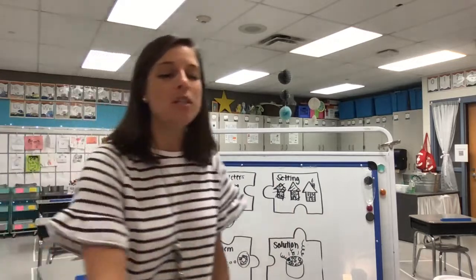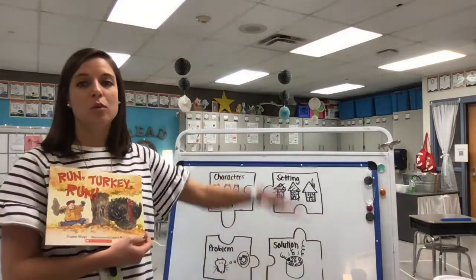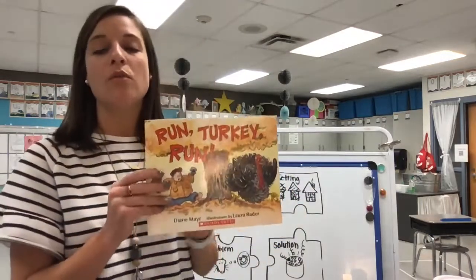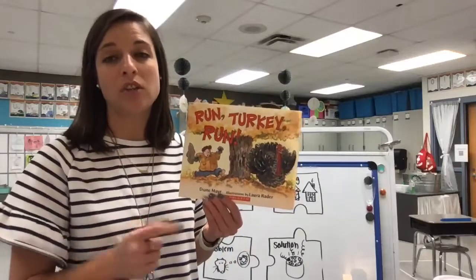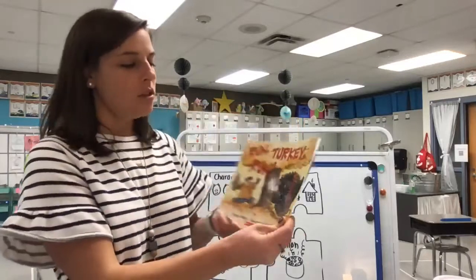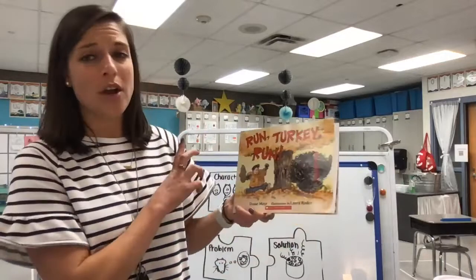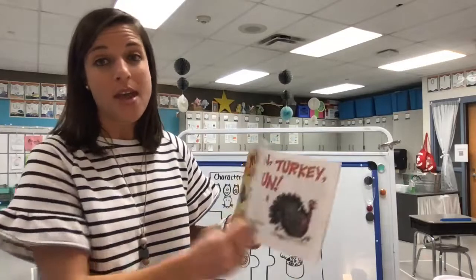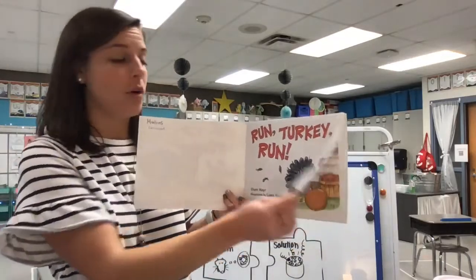So let's look at a different book today and talk about the different story elements in it. We've already read this story — Run Run Turkey. So we're just going to do a picture walk and talk about the character, setting, problem, and solution. In the title we can already hear 'Run Run Turkey!' — there must be a problem going on with the turkey, and I know the turkey must be a character in the story.